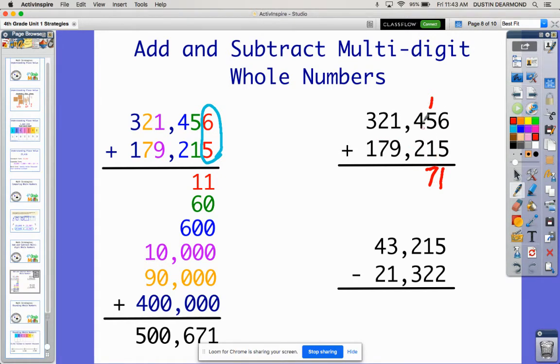So now we can add our hundreds together, 4 and 2. Again, we know that 4 and 2 is 6. 400 and 200 gives me 600, along with the 71 I already had. So we move to the thousands place, 9,000 and 1,000. We know that over here it was going to be 10,000.